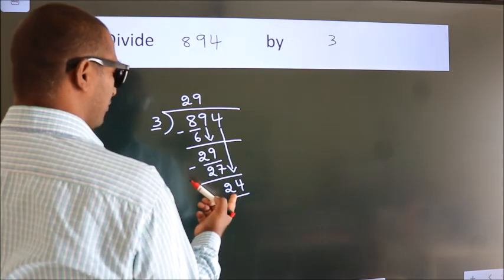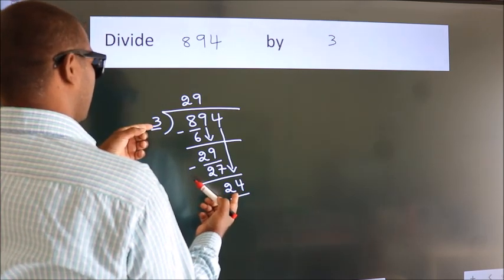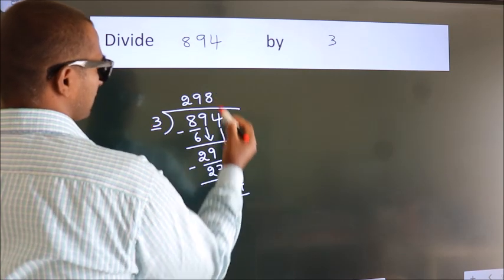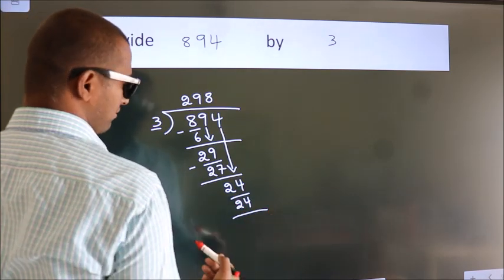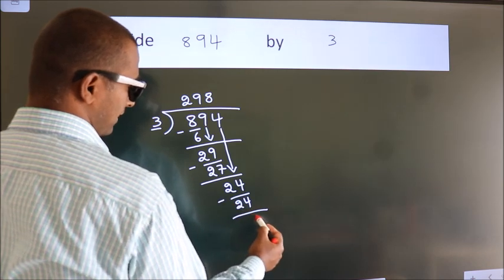When do we get 24 in 3 table? 3 times 8 is 24. Now we subtract. We get 0.